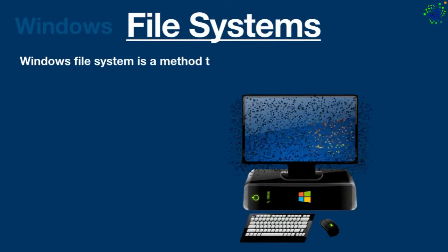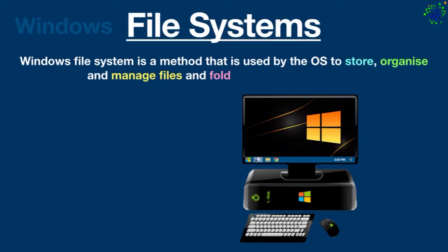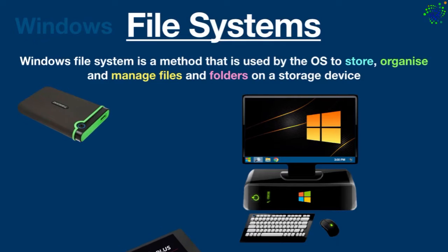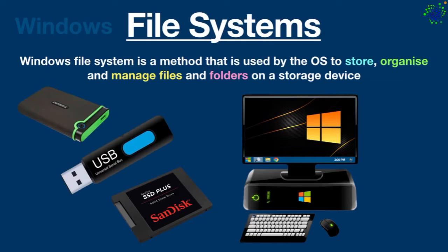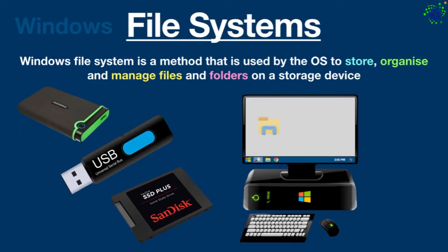Windows File System is a method used by the operating system to store, organize, and manage files and folders on a storage device. To put it simply, a file system is a collection of methods and structures used by the operating system for the arrangement of data on any digital storage device, such as a hard drive, SSD, or USB drive. Every time you open a file on your computer, your operating system uses its file system internally to load it from the storage device.